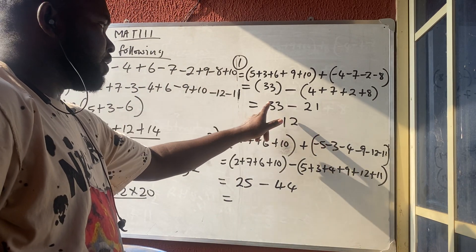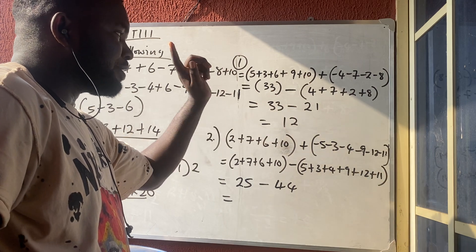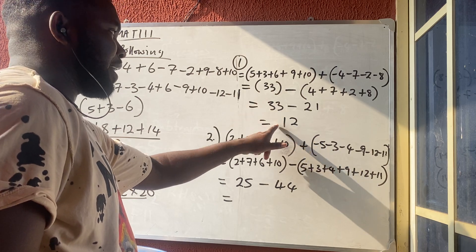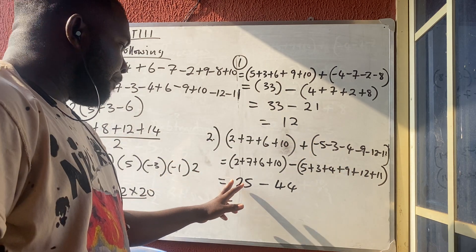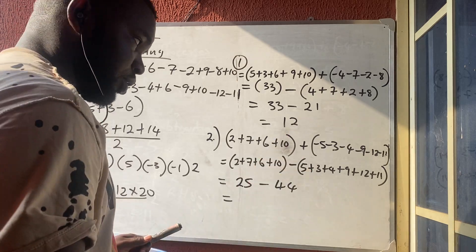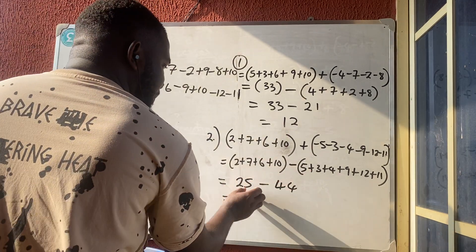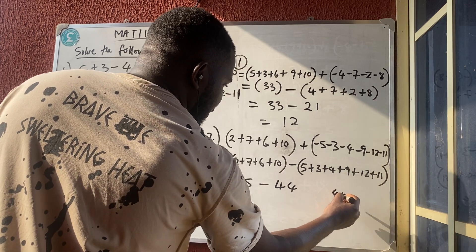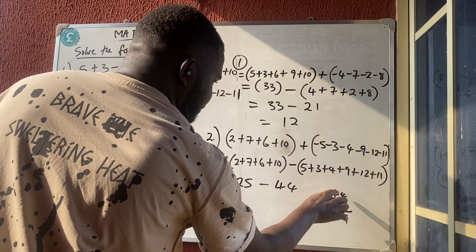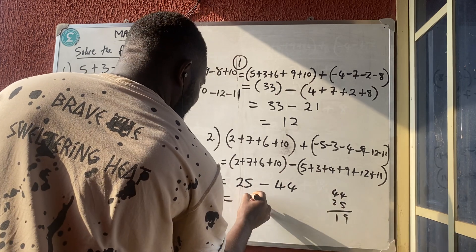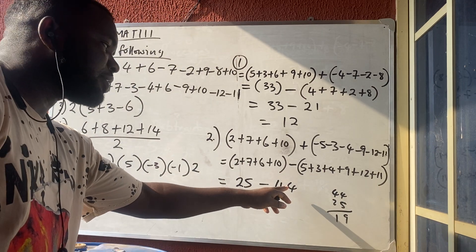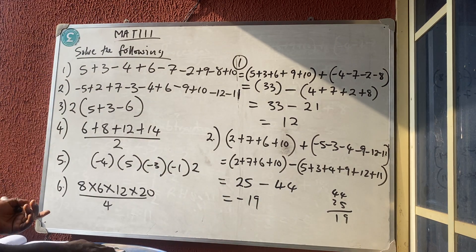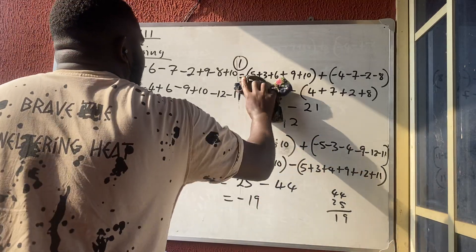We have 25 (positive group) and 44 (negative group). The operation is plus minus, which gives minus, and the answer takes the sign of the bigger number. The bigger number is 44, which is negative, so the answer is negative. Therefore 44 minus 25 gives 19, and since the bigger group is negative, our answer is minus 19.